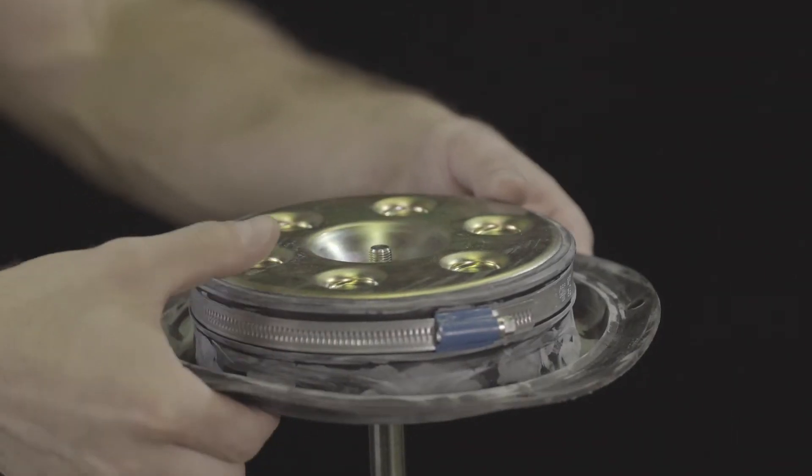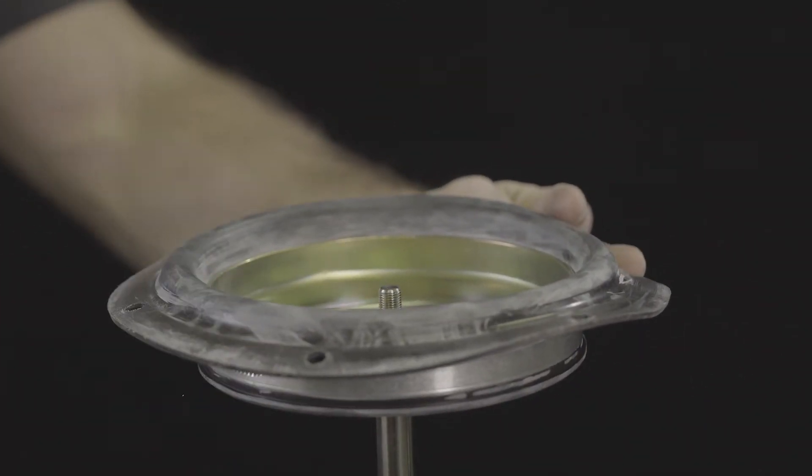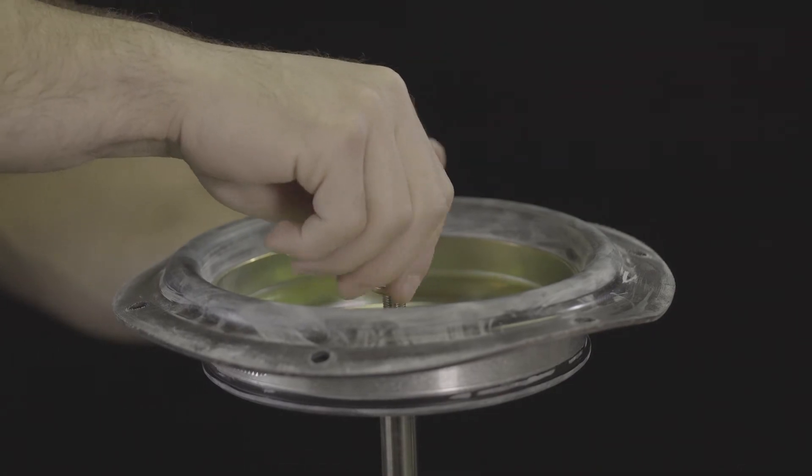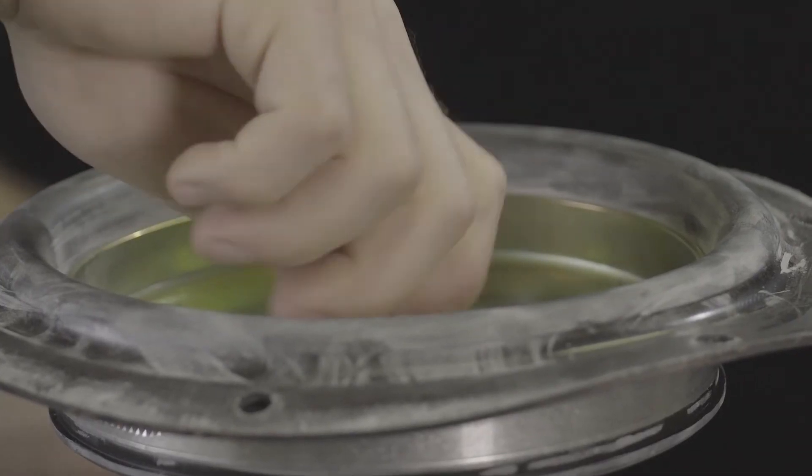Remove the diaphragm plate from the actuator stem, flip upside down, and place them back onto the actuator stem. Reinstall the collar nut.